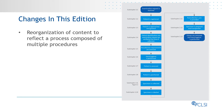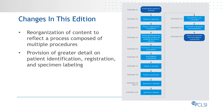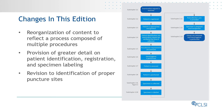Other changes include provision of greater detail on patient identification, registration, and specimen labeling processes. This information has been updated to align with the second edition of CLSI document GP33 on accuracy in patient identification. Additional revisions address the identification of proper puncture sites, where limitations for capillary puncture site selection are discussed, and rationales are provided for sites that must not be used, sites that require physician permission, and sites that should be avoided.